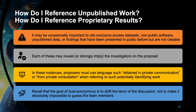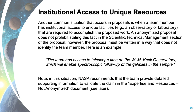The goal of dual anonymous is to create a shift in the tenor of discussion, not to make it absolutely impossible to guess who the team members are. For proposals where a team member has institutional access to unique facilities such as an observatory or laboratory required to complete the work, you can say in the anonymized section that 'the team has access to telescope time on the Keck Observatory — this will enable spectroscopic follow-up.' That doesn't reveal identities, but you should validate that claim in the not-anonymized expertise and resources document.